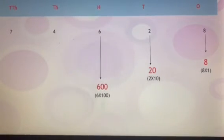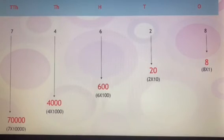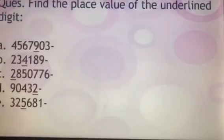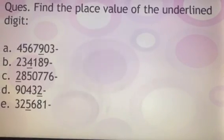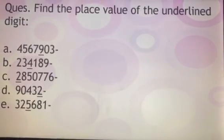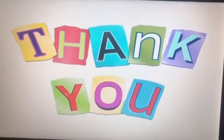Similarly, the place value of 4 will be 4 multiplied by 1,000, that is 4,000. And the place value of 7 will be 70,000. Now, children, you will find the place value of the underlined digit as explained earlier. Students, keep practicing.